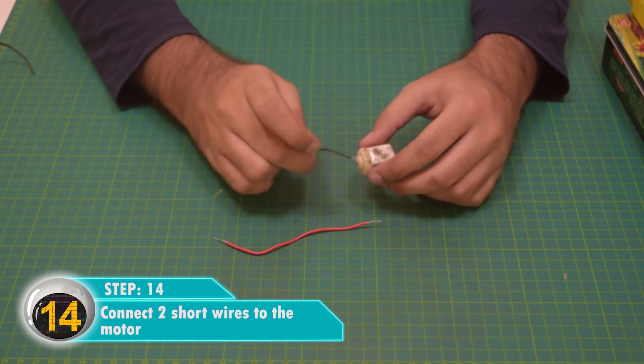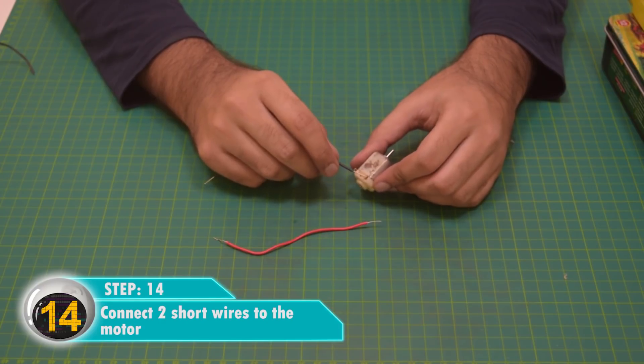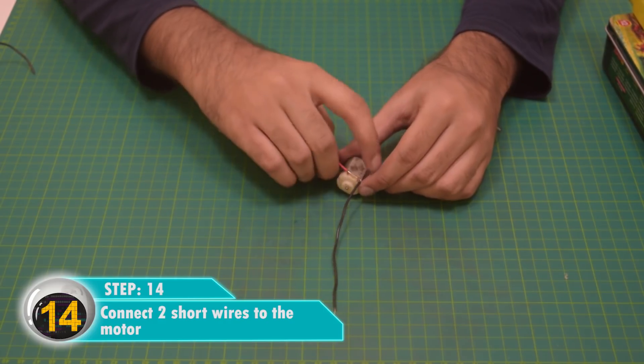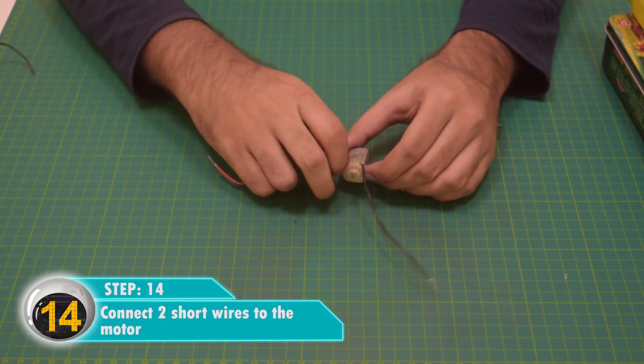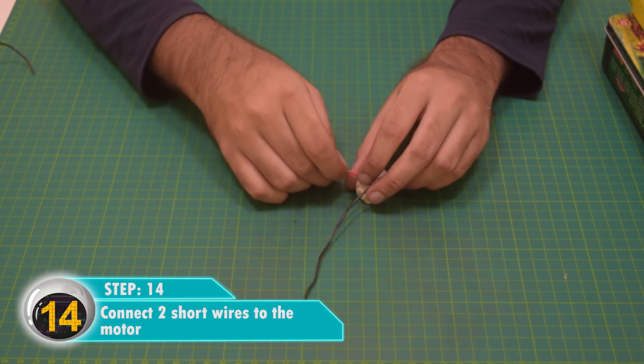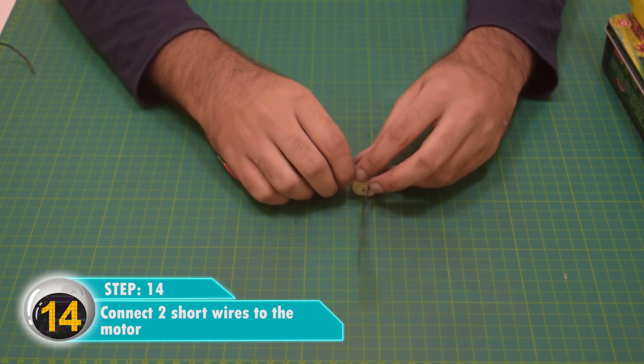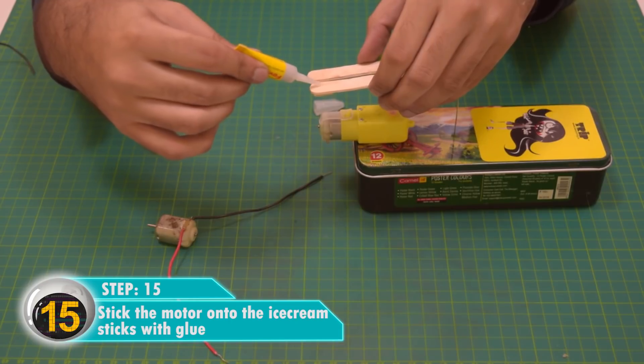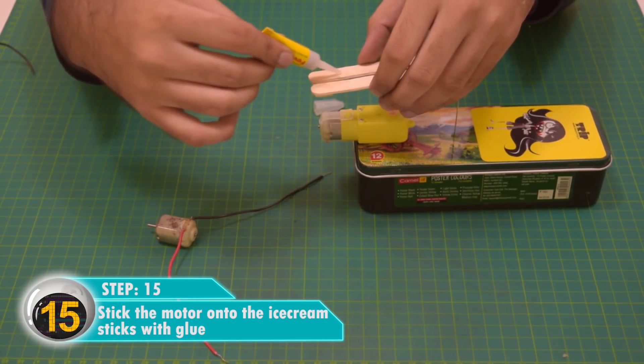Now we'll make the circuit, so first we need to connect two short wires to the motor. Okay, that's done. I'm guessing there's going to be a switch involved as well? Yes, and a battery as well. Great. Now stick the motor on the ice cream sticks with glue. Stick it in the middle, right? Yes.